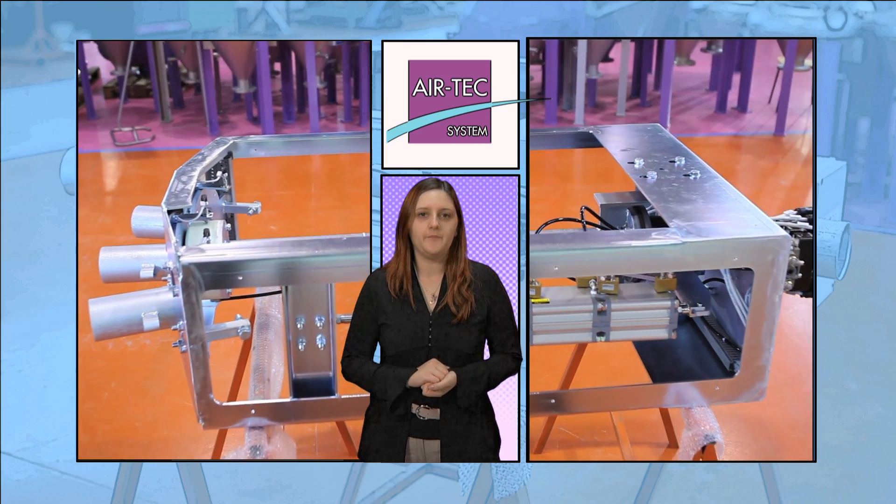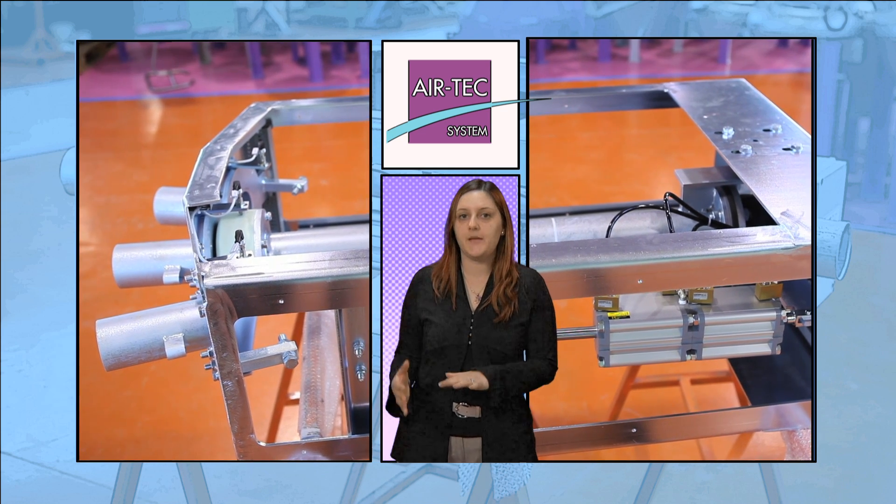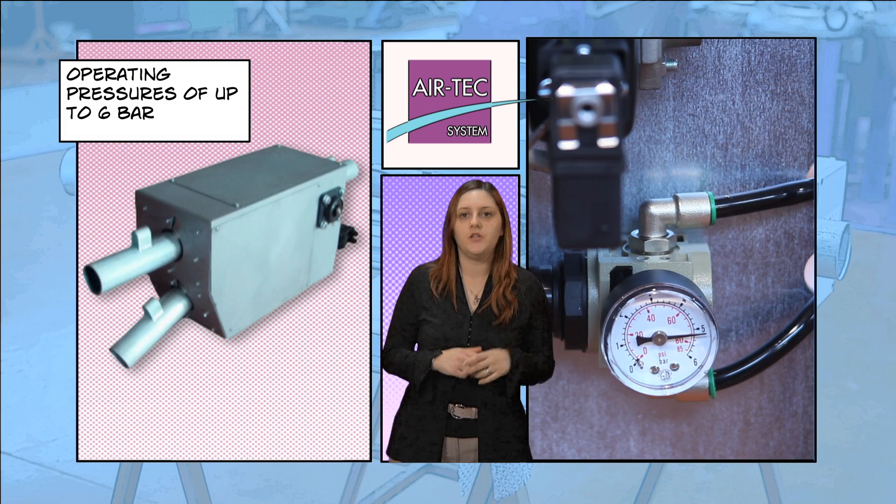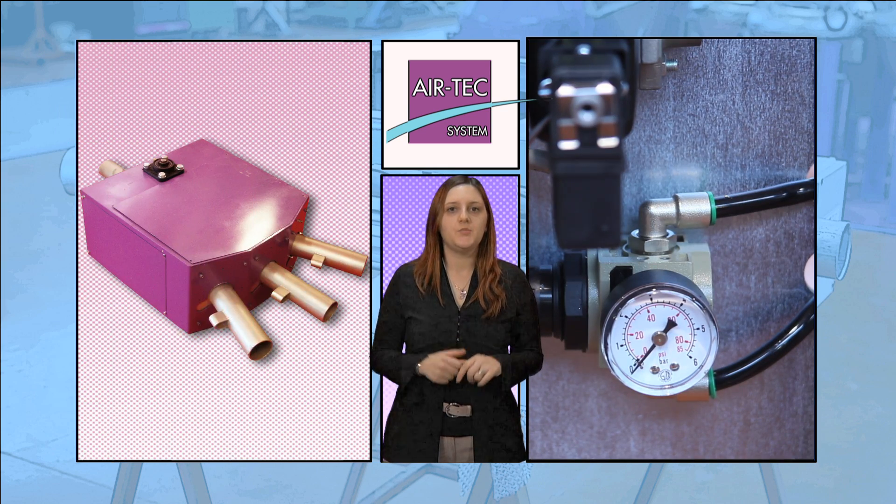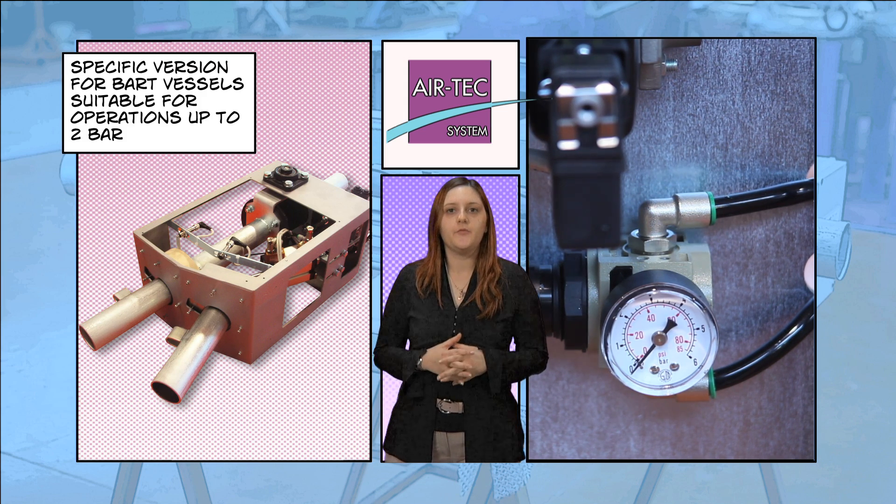What are the diverter's characteristics? The diverter is certified to an operating pressure of 6 bar and is available in two- and three-way versions. There is a specific version for barred vessels suitable for operation up to 2 bar.